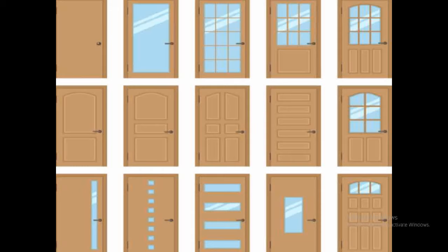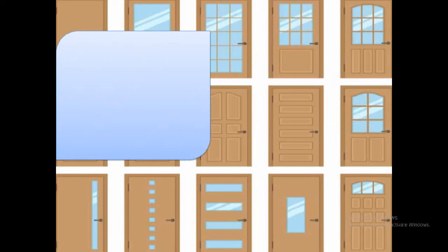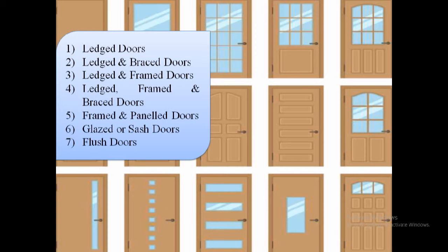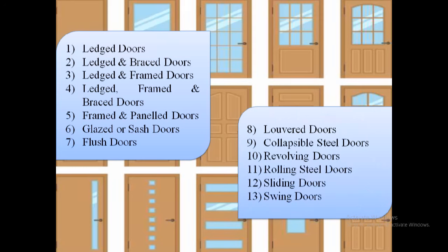Hello friends, thanks for clicking and welcome to my channel, only for civil engineers. In this video we will discuss about types of doors depending upon the type of materials, arrangement of different components, method of construction, etc. The common types of doors used in buildings can be grouped as follows: ledge doors, ledge and brace doors, ledge and frame doors, ledge frame and brace doors, frame and panel doors, glitch or sash doors, flush doors, lower doors, collapsible steel doors, revolving doors, rolling steel doors, sliding doors, and swing doors. But in this video we will discuss only the first four types of doors.